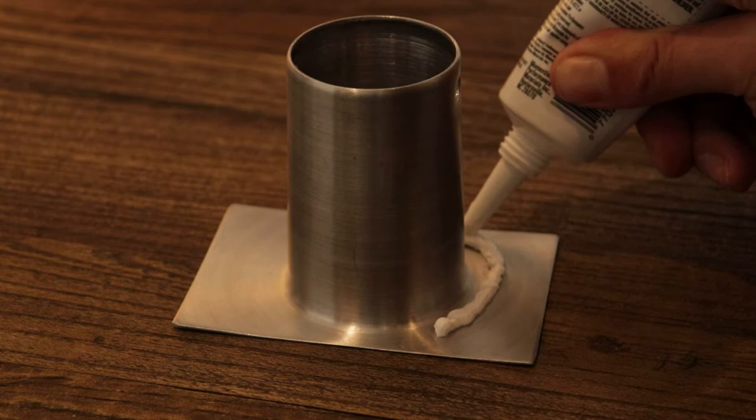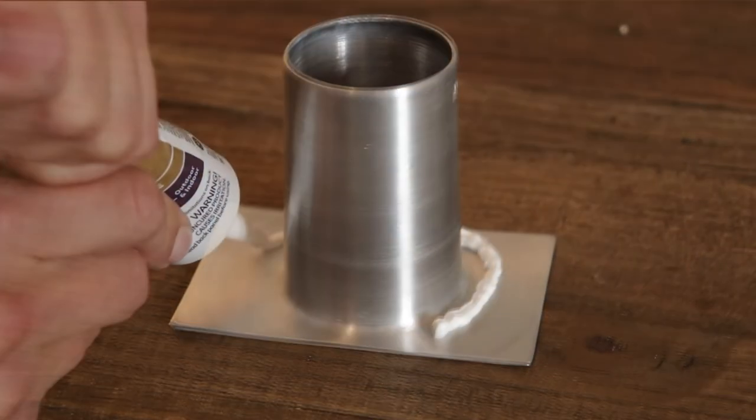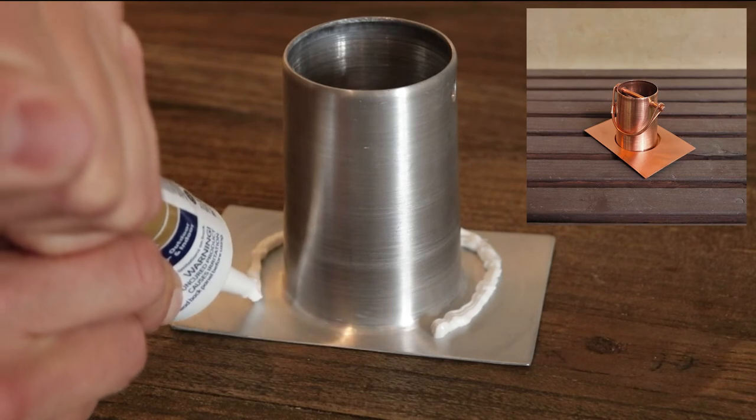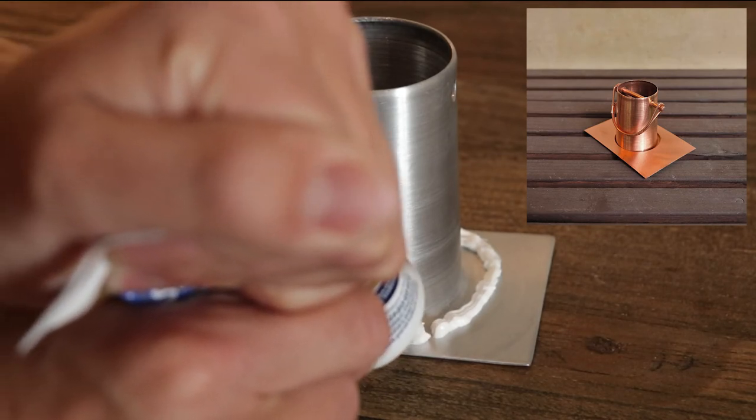Spread the caulk on the flange around the tube of the installation kit and ensure that it is spread out evenly. It's important to note that when using a copper installation kit, cover the entire bottom of the flange to provide a good barrier between the metals.